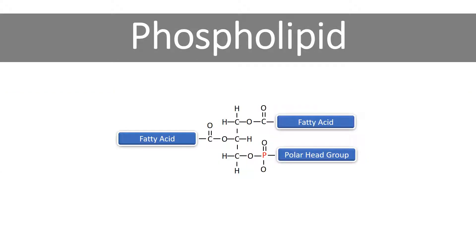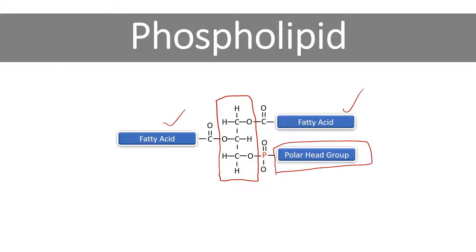Now we know what a triglyceride is, what a fatty acid is, and what omega-3 and omega-6 fatty acids are. Now I want to talk about a phospholipid — and really, all that buildup was to get to phospholipids. A phospholipid is similar to a triglyceride: you still have the glycerol backbone and fatty acids, but in this case we have two fatty acids and then another compound in place of the third. And it's a phospholipid, so there's a phosphorus group right there.